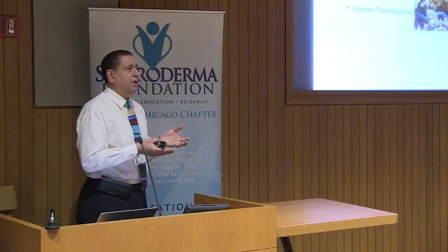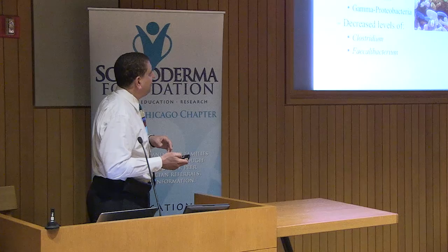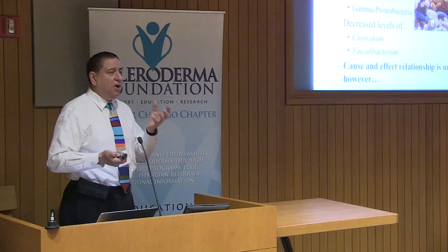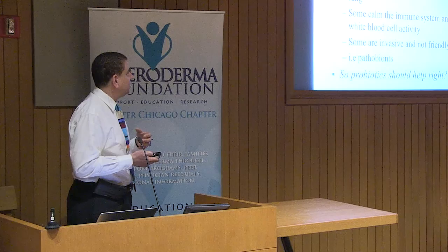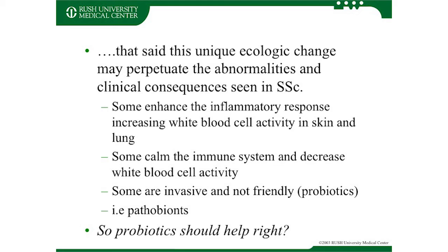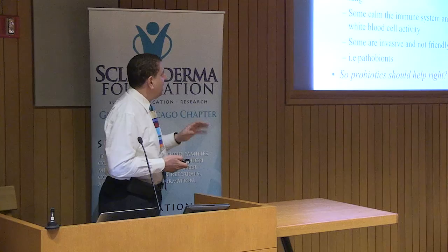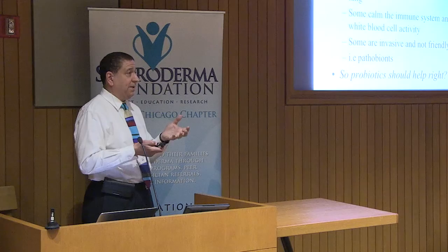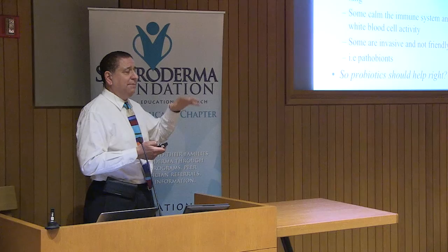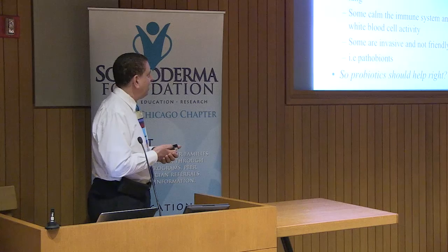Scleroderma patients have less clostridium — which tends to be a bad bug generally, so that's not necessarily a bad thing — and less faecalibacterium. We know there's a difference, but we don't know what comes first. Some investigators have noted that this unique ecological change might perpetuate the abnormalities — perhaps the change in bacteria perpetuates or accentuates the scarring, altered neural innervation, or myopathy seen in scleroderma. Some bugs are immunotolerant and calm the immune system; others are invasive pathobionts that are not friendly.